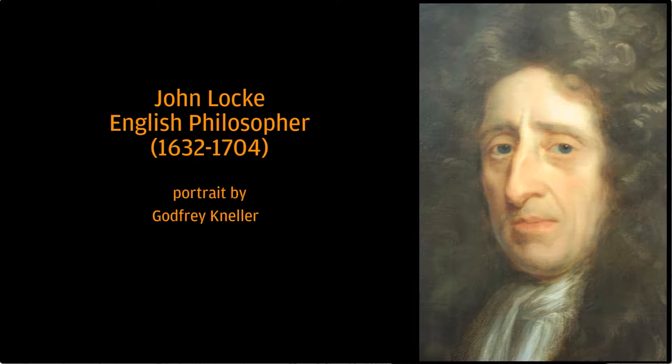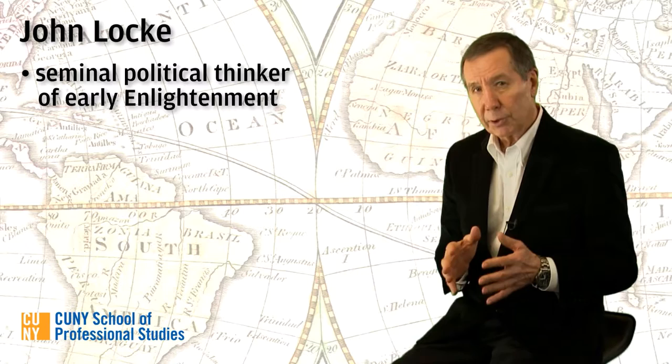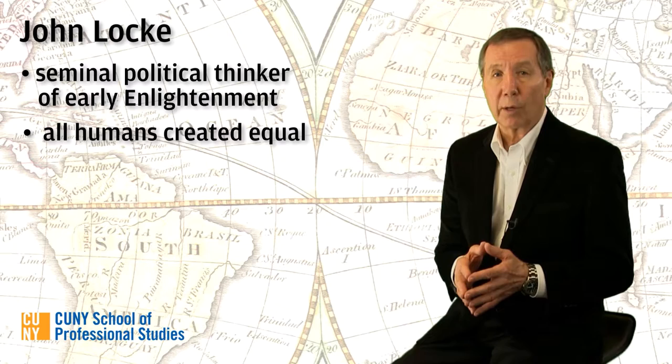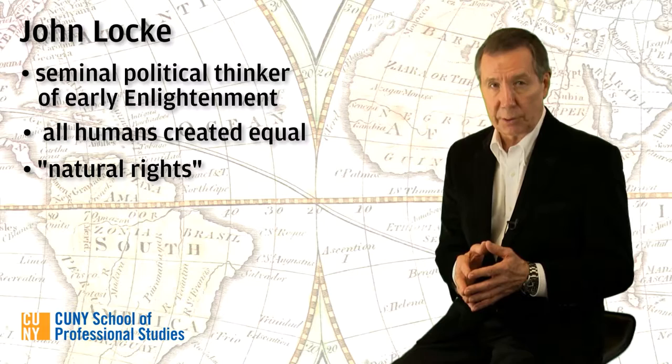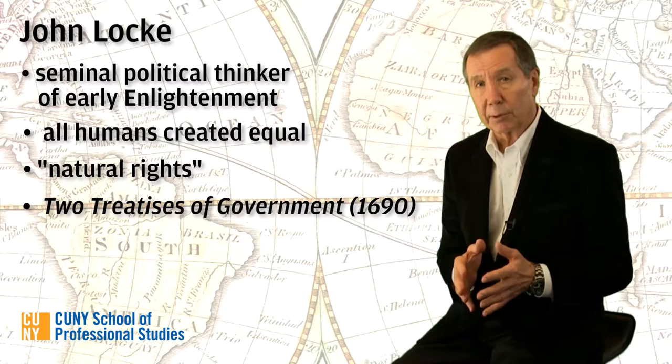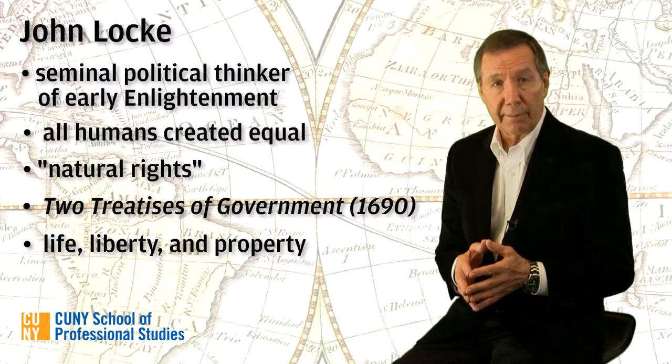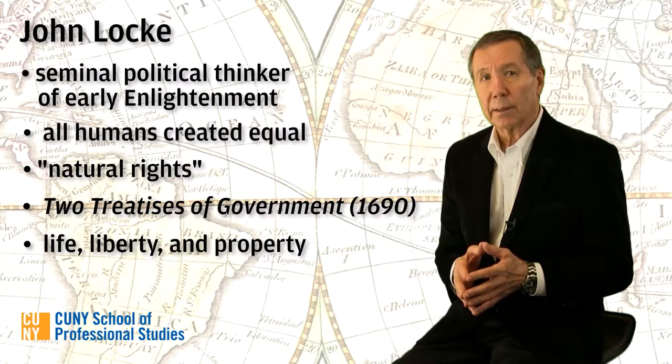The political theories that underlay much of this revolutionary activity were the work of John Locke, an English philosopher whose ideas on politics and the origins and purpose of the state had a sweeping influence on the Enlightenment thinking that emerged in the late 17th century. Central to Locke's view was the notion that all humans are born equal and that all individuals enjoy what he called natural rights. Locke outlined these ideas in his Two Treatises on Civil Government, published in 1690. For Locke, the three natural rights are life, liberty, and property.